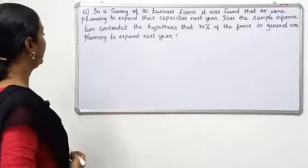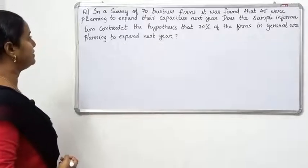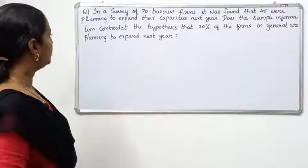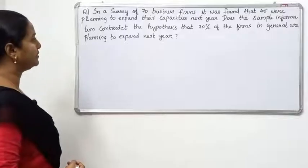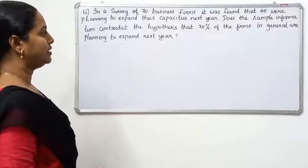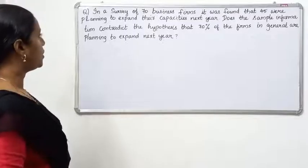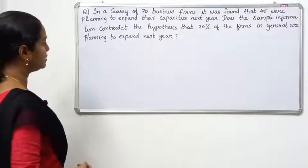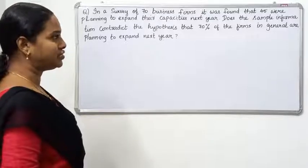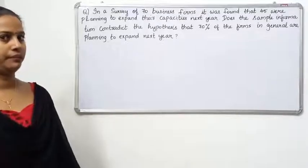Problem 2: In a survey of 70 business firms, it was found that 45 were planning to expand their capacities next year. Does the sample information contradict the hypothesis that 70% of firms in general are planning to expand next year?